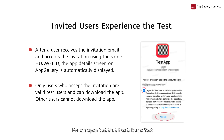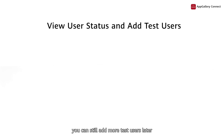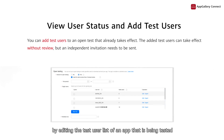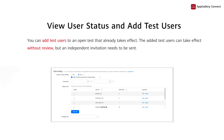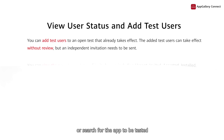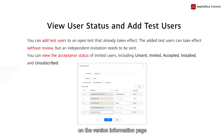For an open test that has taken effect, some target users may be missed out from the invitation. But don't worry, you can still add more test users later. You can do this by editing the test user list of an app that is to be tested. The added test users can take effect without review, but be aware that you need to manually send an independent invitation. Sometimes test users may fail to receive the invitation or search for the app to be tested. You can check the status of test users on the version information page. The states include: unsent, invited, accepted, installed, and unsubscribed.